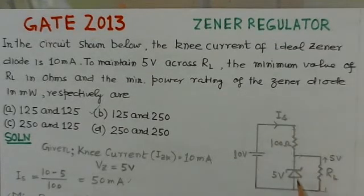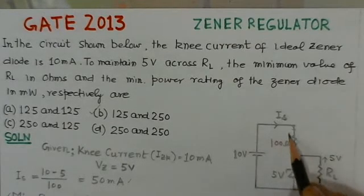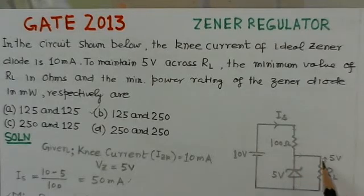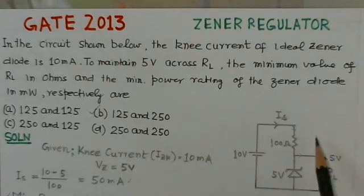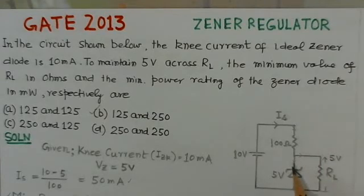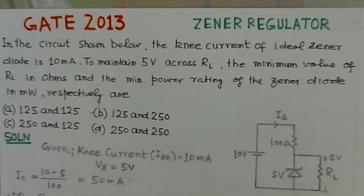The corresponding circuit is shown here. This unregulated supply, 100 ohms is the series resistance, and there is a Zener diode of 5 volts rating. The value of the output voltage is 5 volts. We have to find the minimum value of the load resistance and the Zener power rating needed for this circuit.